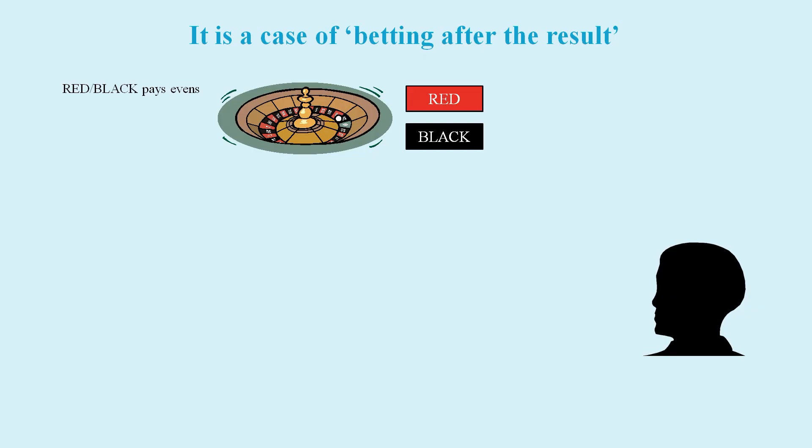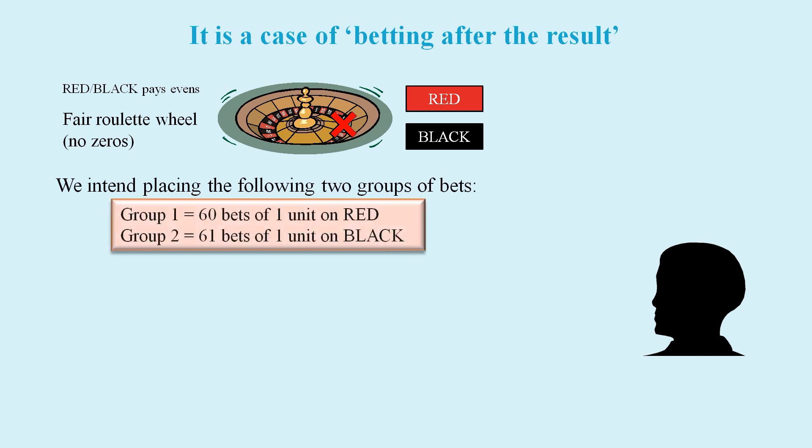An easier way to see how this trick works is to consider some bets on a roulette wheel that is fair in that it has no zeros. We do two groups of bets: group one is 60 bets on red, and after that we do group two, which is 61 bets on black.